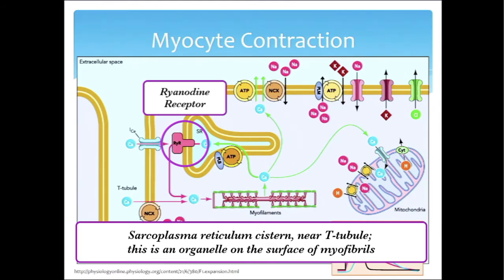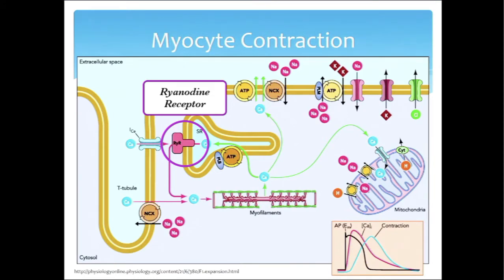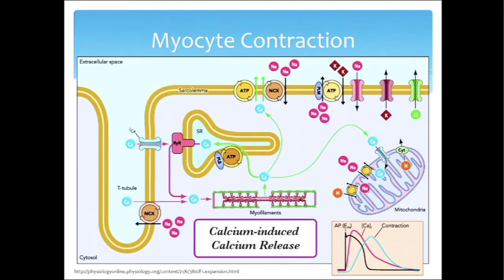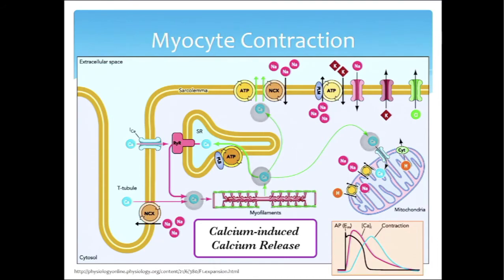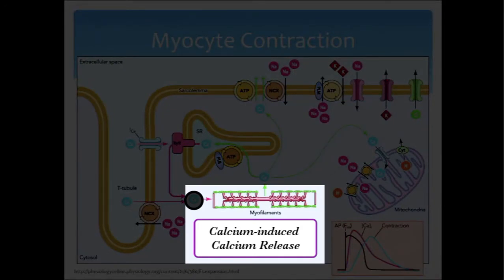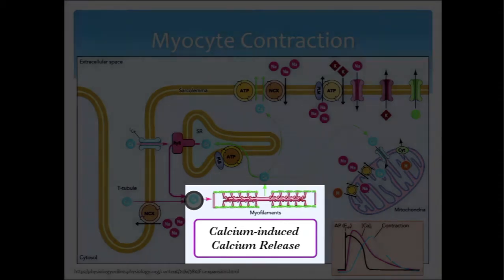That receptor is called the ryanodine receptor — one of those buzzwords perhaps coming back from cell biology. Here's the ryanodine receptor. This is important because calcium comes along and interacts with the ryanodine receptor, triggering the often-talked-about, rarely-understood process of calcium-induced calcium release. Calcium interacts with the ryanodine receptor, and the sarcoplasmic reticulum — which is like a calcium bank — releases and effuses all of this calcium. Now you have all this calcium in the cytosolic space, able to interact with the actin-myosin arrangement and allow myocyte contraction to actually take place.